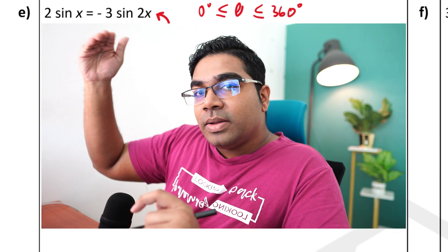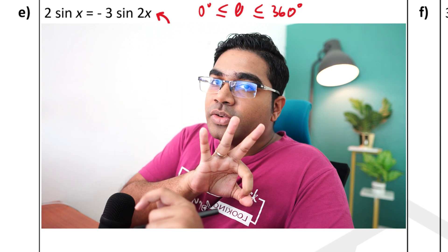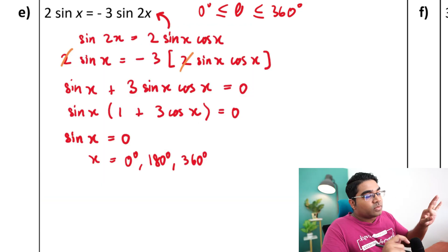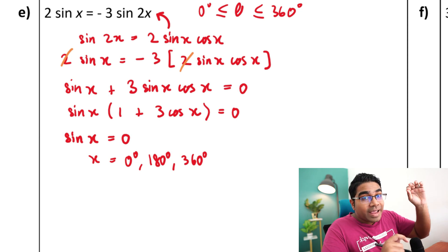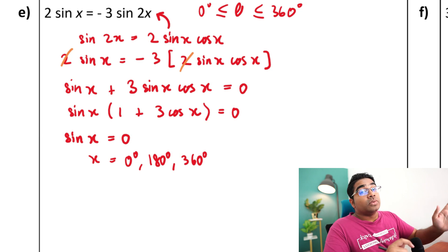Now earlier if we had divided the whole equation by sine of x then we would lose these three solutions. These three solutions will be missed and therefore we should never divide the equation with anything containing the x. Now let's go to the other solution.